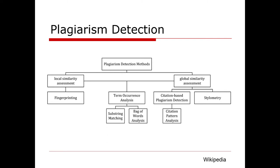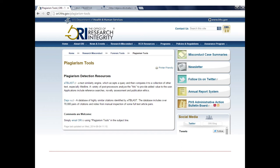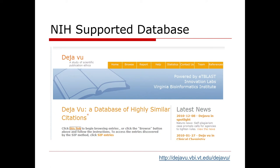There's term recurrence analysis and other ways of catching whether a paper looks similar or identical to other papers that are published. Oftentimes these tools will give you, paragraph by paragraph, what the level of similarity is and what the other references are. One of the plagiarism tools that is available is called Deja Vu. You can also go to the Office of Research Integrity website and look at these different plagiarism tools. Deja Vu is a database of highly similar citations, and you can look up how similar a given paper is if there are similarities to other papers.